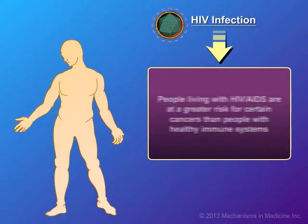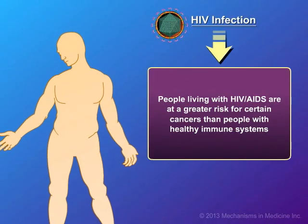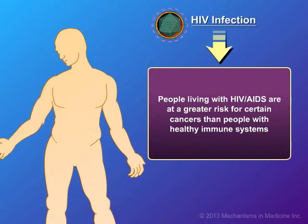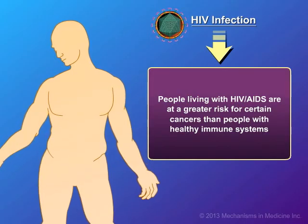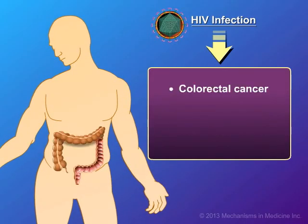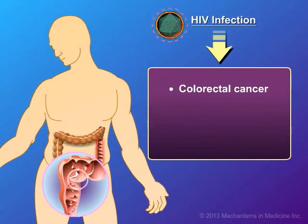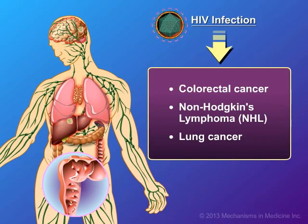People living with HIV or AIDS are at a greater risk for certain cancers than people with healthy immune systems, notably colorectal cancer, non-Hodgkin's lymphoma or NHL, and lung cancer.